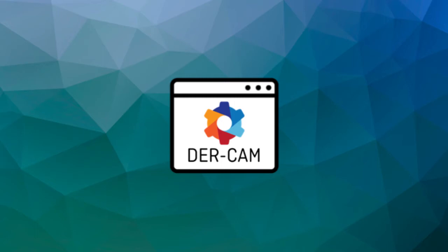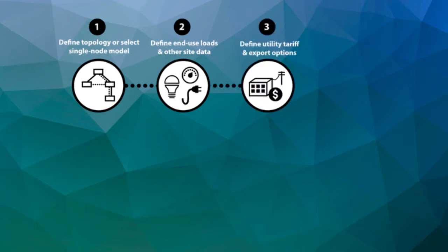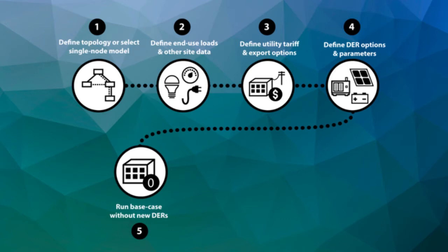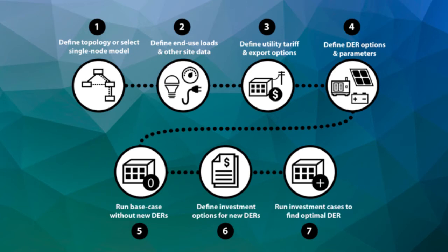The seven steps are: first, select either a single node or multi-node model. Second, define site-specific data like loads and weather. Third, define the utility tariffs, rates, and export options. Fourth, define DIR options and parameters. Fifth, once these inputs are defined, run a reference case — this is the performance of the site in its current state. Sixth, with a reference case complete, enable consideration of new DER investments. Seventh, run an investment case to allow DIRCAM to select new DER investments. That's the DIRCAM workflow at its simplest, but let's take a moment to discuss each of these steps in a little more detail.